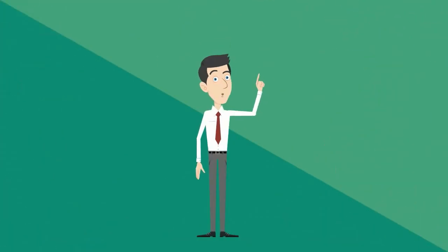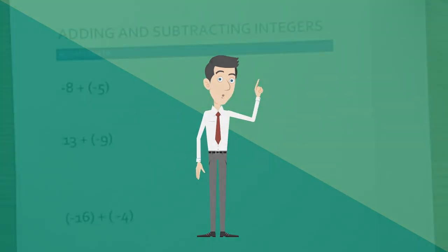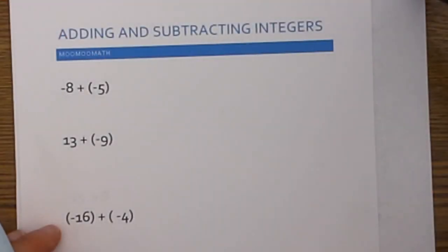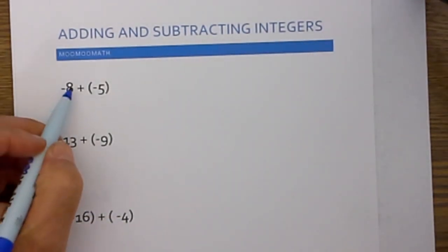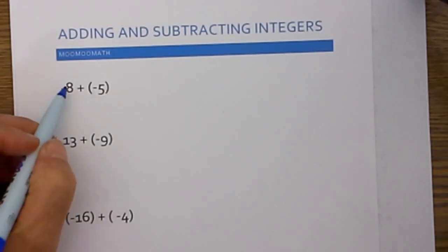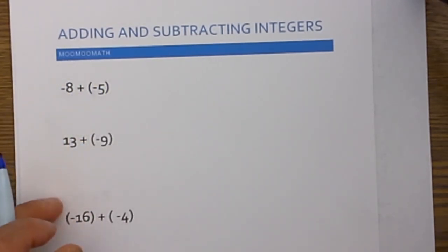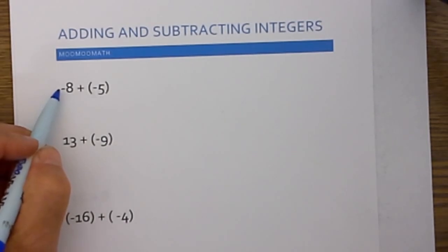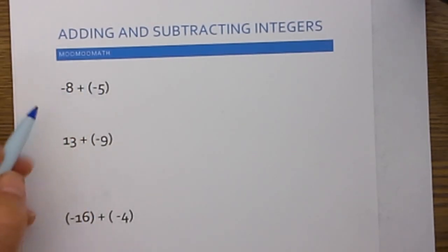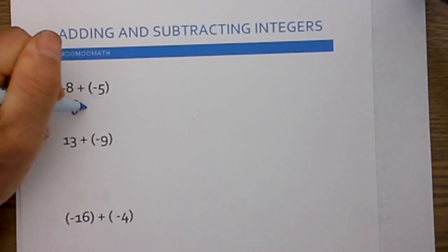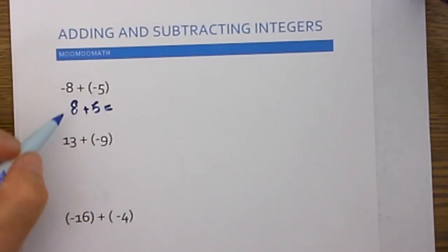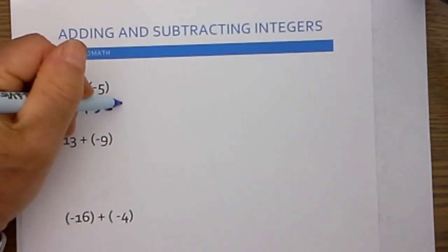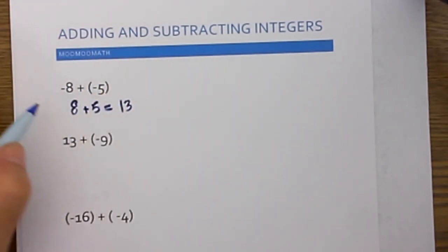Let's work a couple of example problems so we can see how the flowchart works. Applying the flowchart: is the problem addition? Yes. Are the signs the same? Yes — so we add the two numbers together. 8 plus 5 is equal to 13, and then use the sign of the two numbers, so it becomes negative 13.